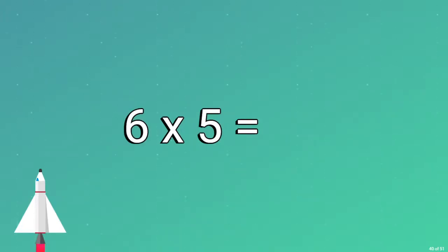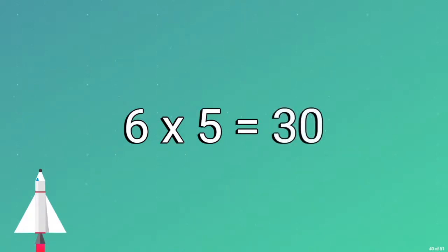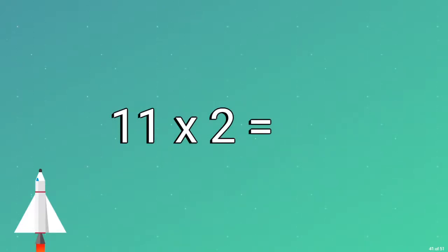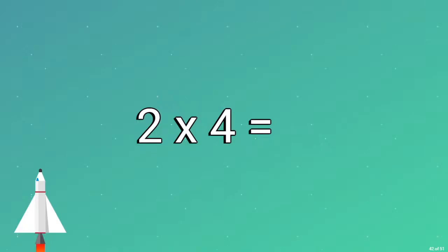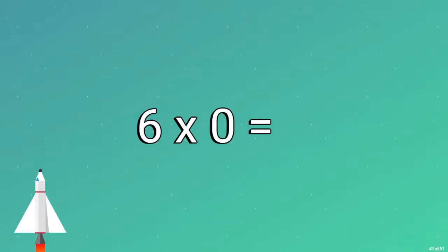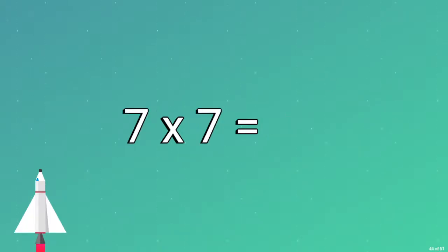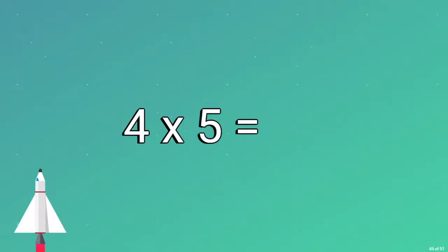6 × 5 equals 30. 11 × 2 equals 22. 2 × 4 equals 8. 6 × 0 equals 0. 7 × 7 equals 49. 4 × 5 equals 20.